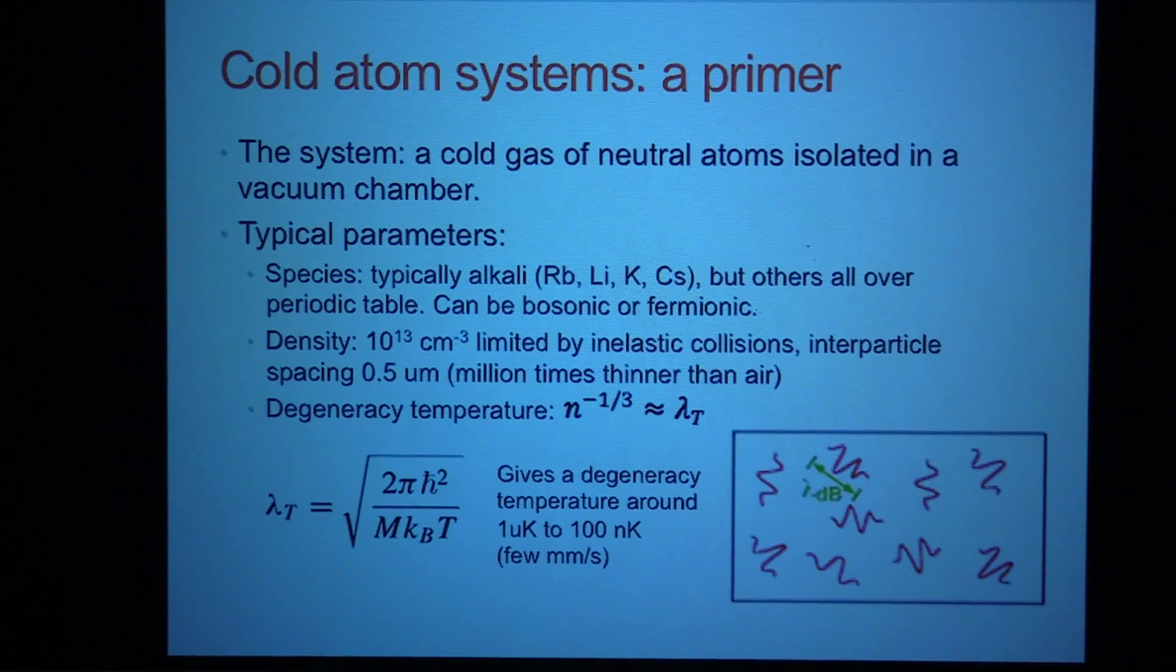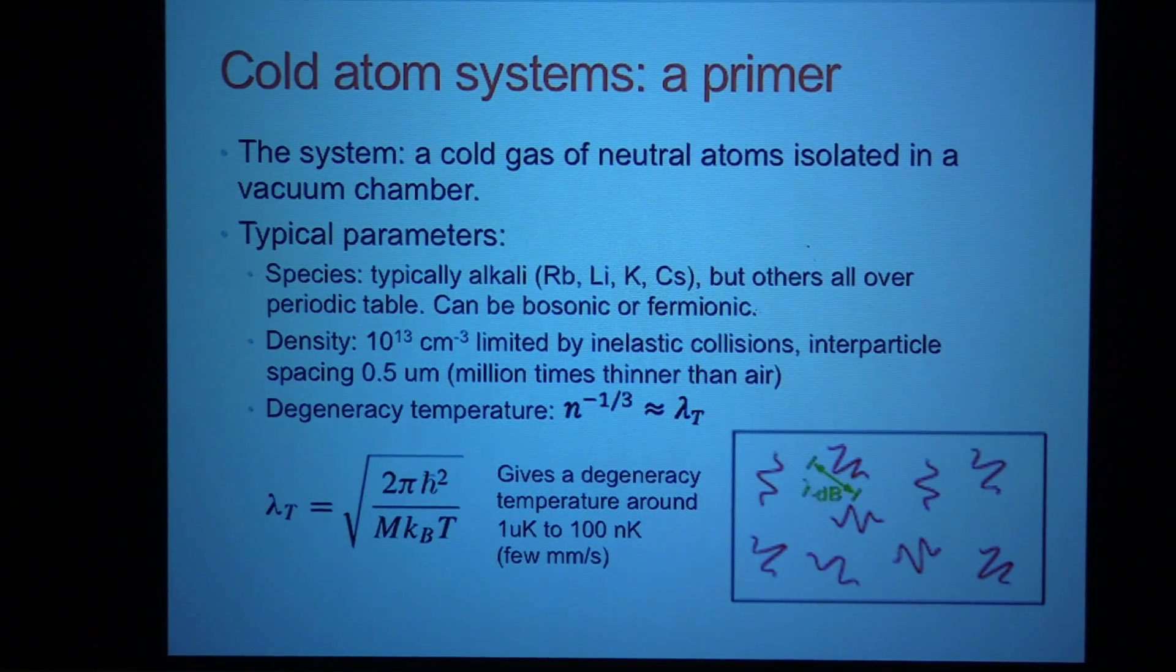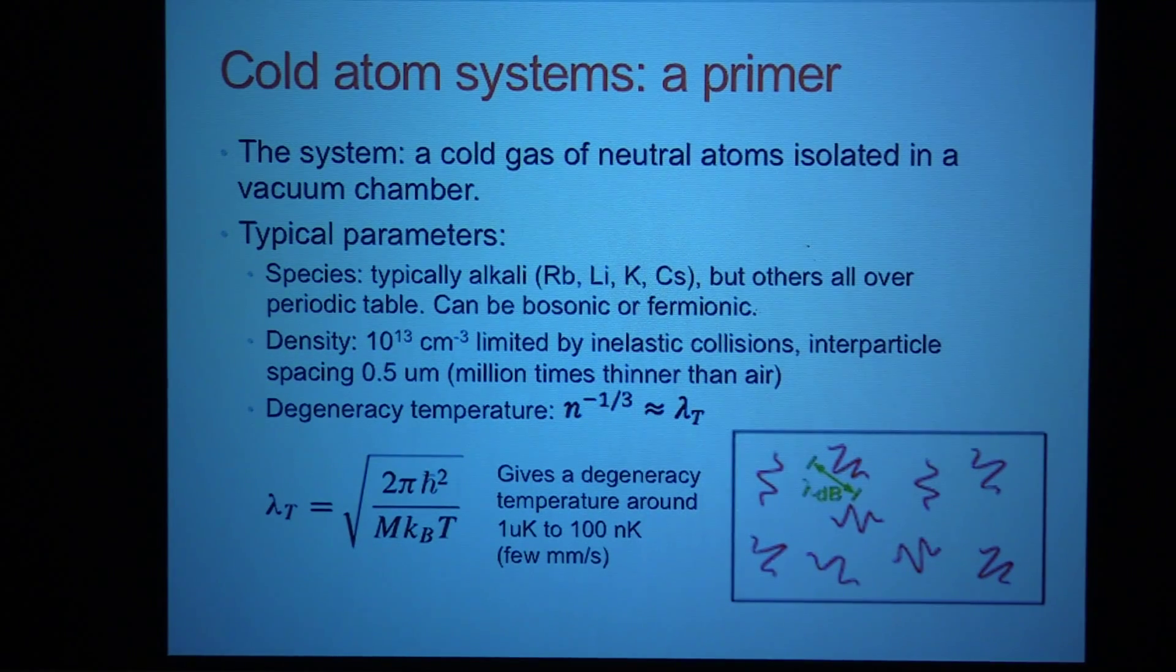And the densities we typically work with are on the order of 10 to the 13 per cubic centimeter. So the limit there is set by inelastic collisions. So if you have a dense gas, then you have a high frequency of three particles coming together, which can lead to molecular formation, and that would lead to the loss of the molecules. So if you want to keep our gas stable, we need to have just sufficient collisions that there's a favorable elastic to inelastic collision ratio, so that you can have the interactions, thermalization, etc., but not processes that would lead to the formation of molecules. So the typical spacing corresponding to this density between the atoms is about half a micron or so. So those gases are very diluted, a million times thinner than air.